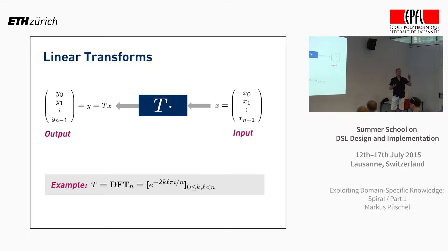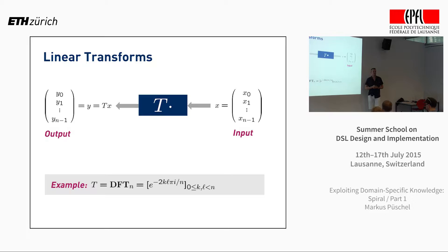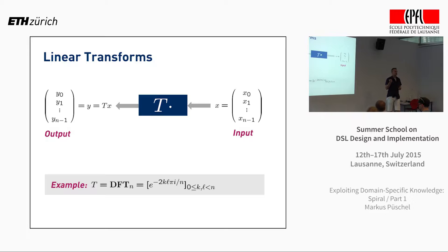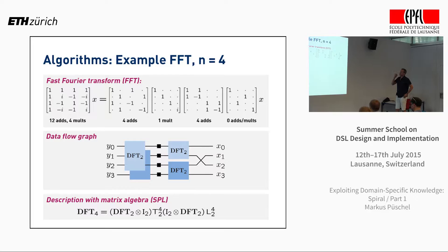So computing a Fourier transform means taking an input vector, multiplying it by this matrix, and getting the output vector. If you do this by definition, it takes O(n²) operations. But it turns out this transform has fast algorithms — as all of you have at least heard — and you can do it in n log n asymptotically. Most transforms in use, many in signal processing, have n log n algorithms, whereas in the generic case the complexity is n².